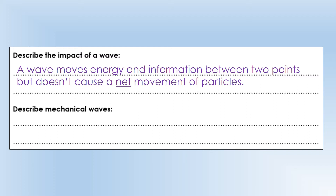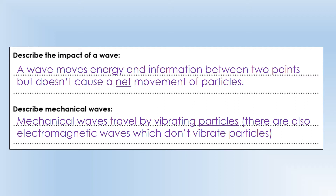We have a category called mechanical waves — these are waves that travel or transmit energy by vibrating particles. There is a second category, essentially the opposite, called electromagnetic waves, which don't move energy by vibrating particles; they work in a completely different way. Examples of mechanical waves include seismic waves, water waves, and sound waves. Examples of electromagnetic waves include visible light, infrared, and ultraviolet.